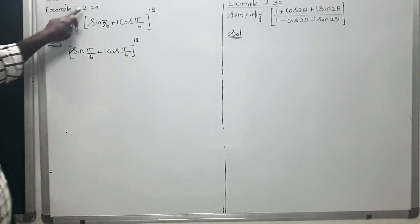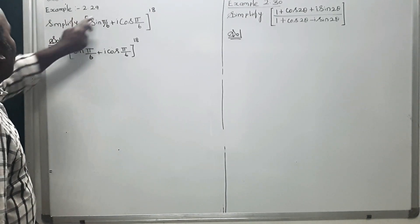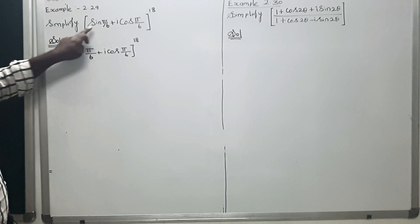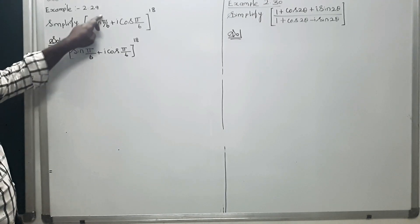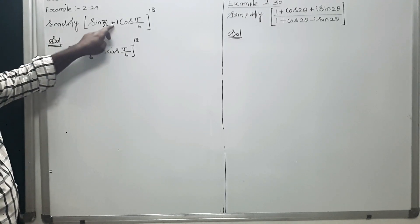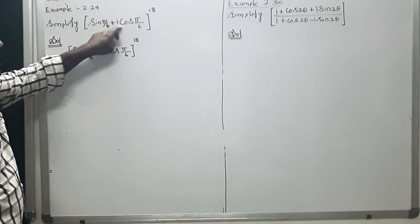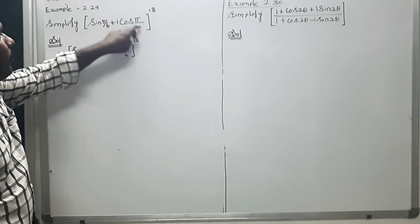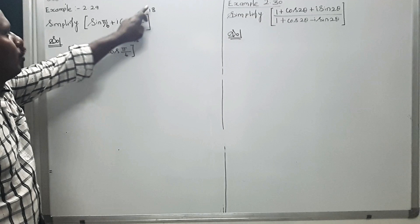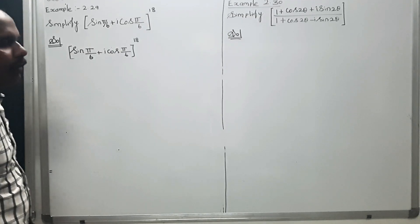Next, Example 2.29. Simplify (sin π/6 + i cos π/6) the whole power 18.